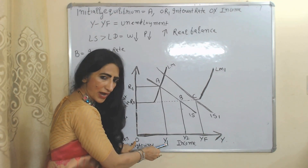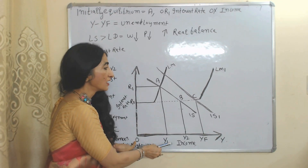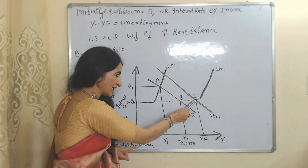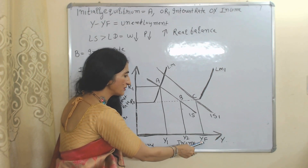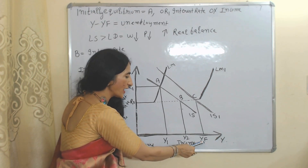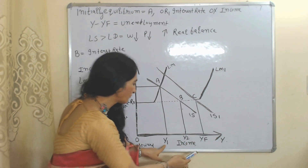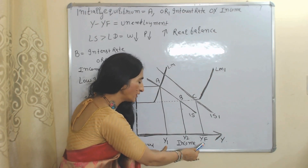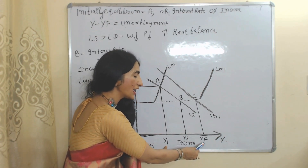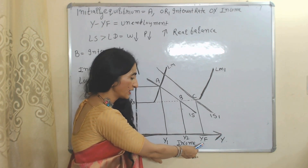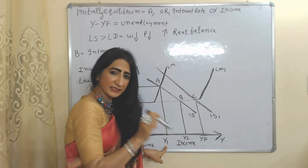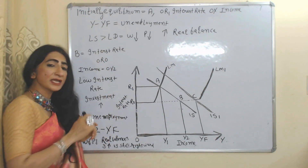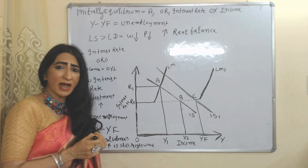Our initial equilibrium point is A, initial interest rate is r1, and initial income is y1. But the full employment point is C and full employment income is yf. The difference between y1 and yf will be called unemployment in the economy. If there is unemployment, that means labor supply is more than labor demand.